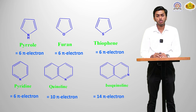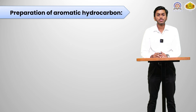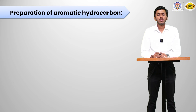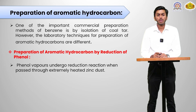The next set of aromatic compounds is pyridine, quinoline, and isoquinoline, with pi electron counts of 6, 10, and 14 pi electrons respectively. Now we will discuss about the preparation of aromatic hydrocarbons.